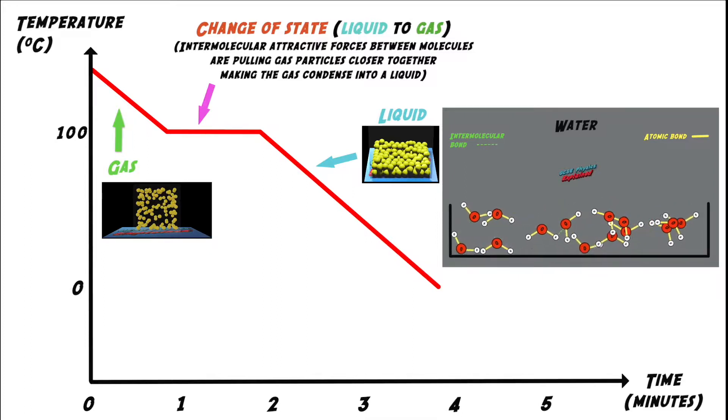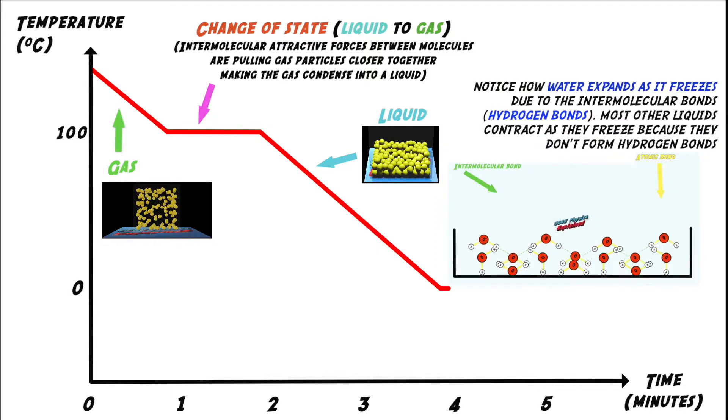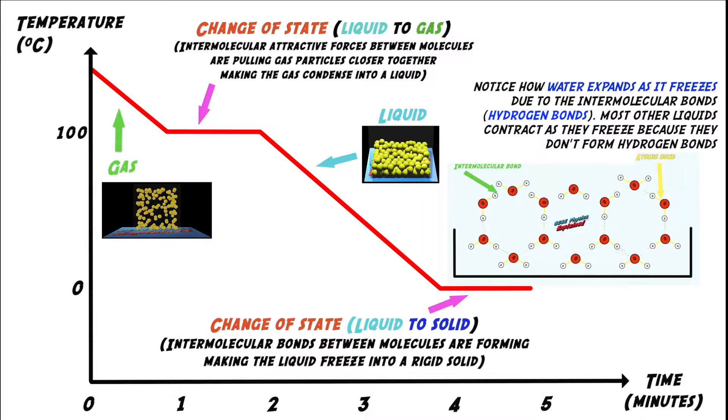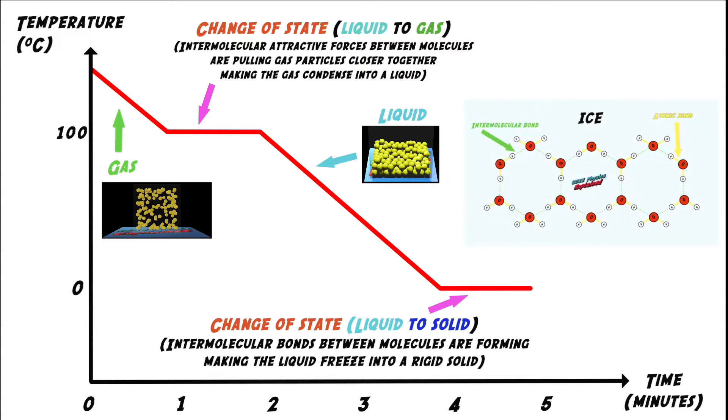If the molecules are cooled further, they slow down enough for stable intermolecular bonds to form between the molecules and start holding them in a rigid structure, changing the state from liquid to solid.